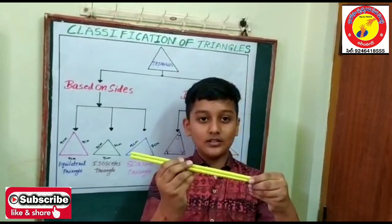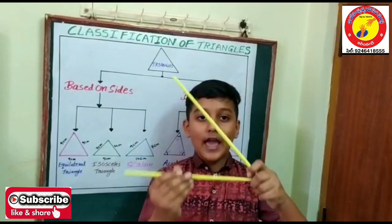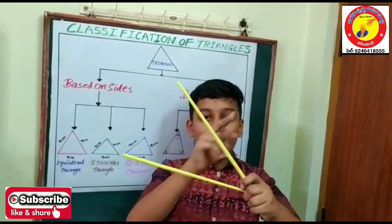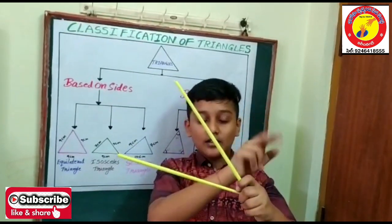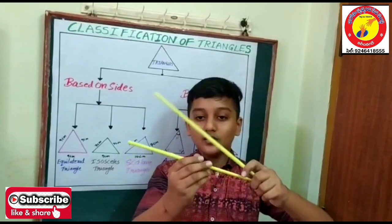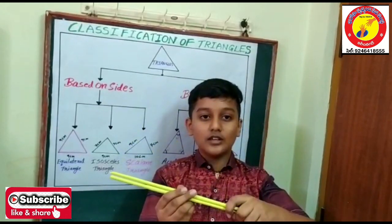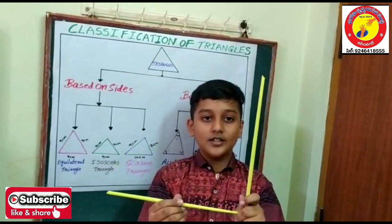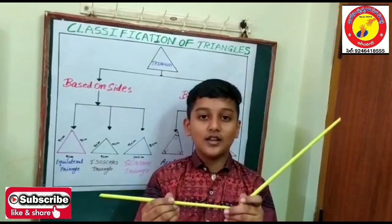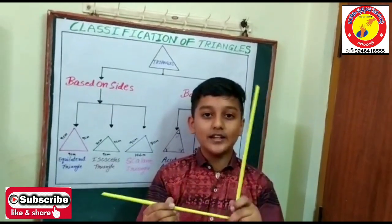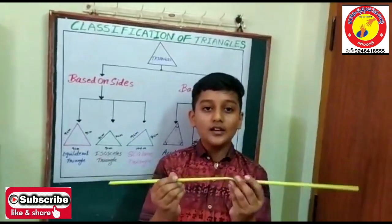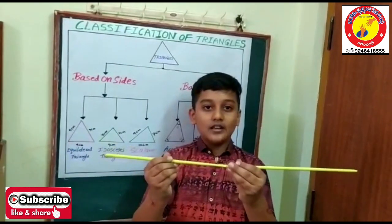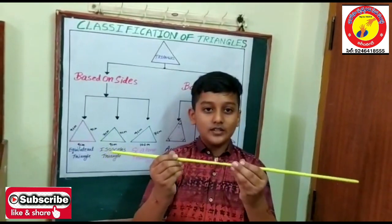Zero angle. Acute angle — an acute angle lies between zero degrees and a right angle. Right angle is 90 degrees. Obtuse angle — an obtuse angle lies between 90 degrees and 180 degrees. Straight angle is 180 degrees.